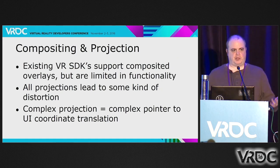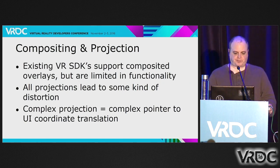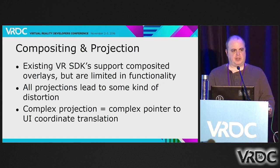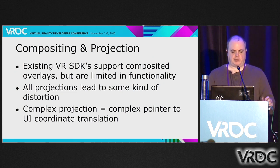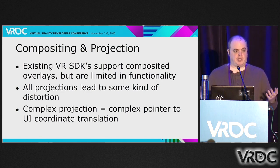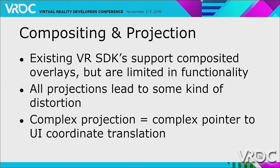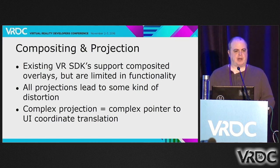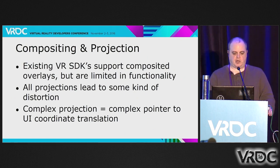So compositing and projection. When you have internal UI, you need to composite it into your scene and choose a projection. The existing SDKs have support for overlays but they're very limited — they will only allow you to do compositing over the scene or compositing into the scene where the UI can be occluded. Whatever projection you choose is going to lead to some distortion. When doing picking against a projection, the more complex the projection, the more complex that mapping from a ray origin and direction to an XY coordinate on the UI is going to be.